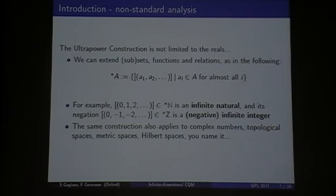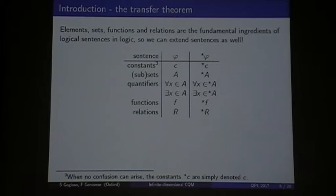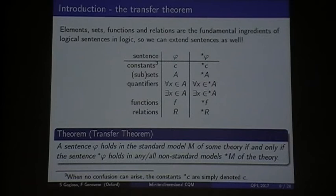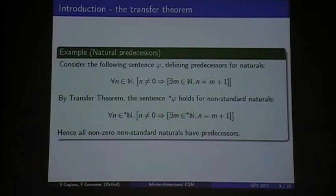Now, the question is, you are formally introducing new elements in the real numbers, or whatever. What's the link with the structure you started with? What happens is that sets, functions, and relations are the basic ingredients of logical formulas. So, once you can extend them, you can also extend logical formulas. And then you have this very nice theorem, that makes everything possible, called transfer theorem, that basically tells you that every time a formula holds in a model, the extension holds in the extended model, and vice versa. I'll give you an example right now. So, this one is the formula that tells you that every non-zero natural number has an antecedent, a predecessor. You can extend this, and since this is obviously true in the natural numbers, this will be obviously true in the non-standard natural numbers. This means that every non-standard natural will have a predecessor, basically.